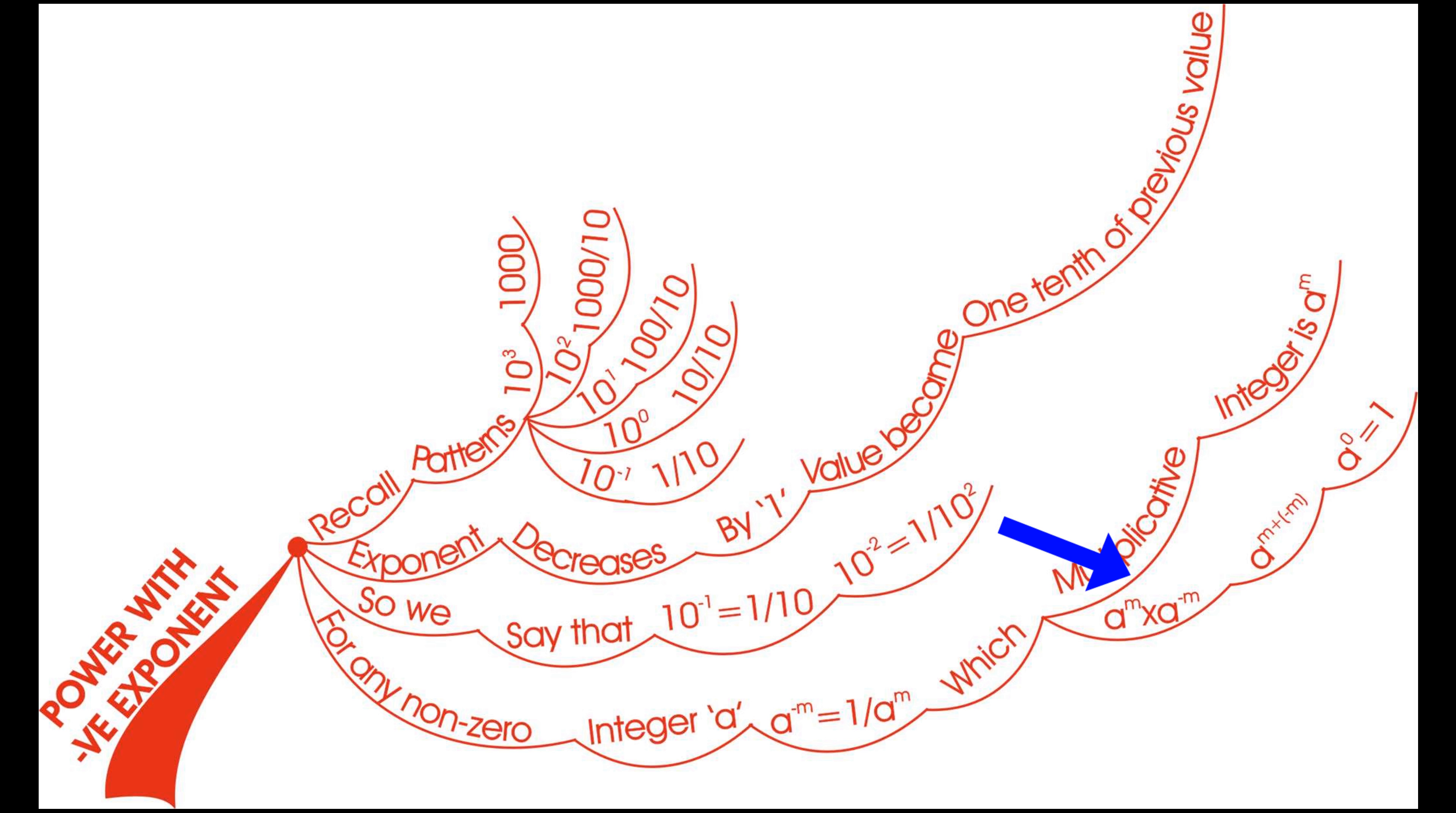That is, a power m into a power minus m is equals to a power m plus minus m. That is equals to a power 0. Finally, that is equal to 1.